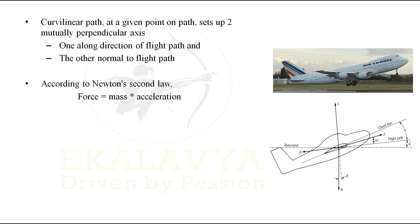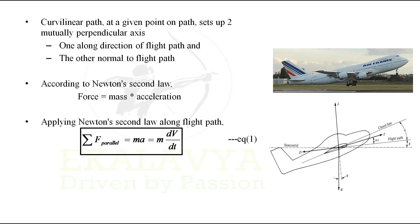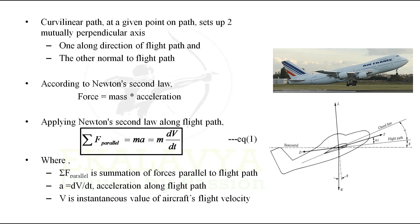According to Newton's second law, force can be expressed as mass into acceleration. Applying Newton's second law along the flight path, we get: summation of forces parallel to the flight path equals mass into acceleration, which can be expressed as mass into dV/dt. Let us denote this as equation 1, where the summation of F parallel is the summation of forces parallel to the flight path, a = dV/dt is acceleration along the flight path, and V is the instantaneous value of the aircraft's flight velocity.